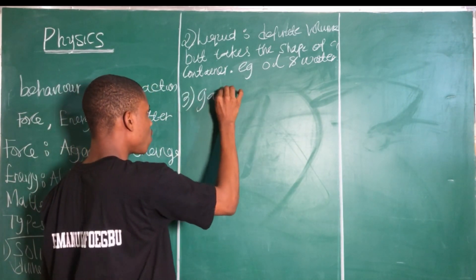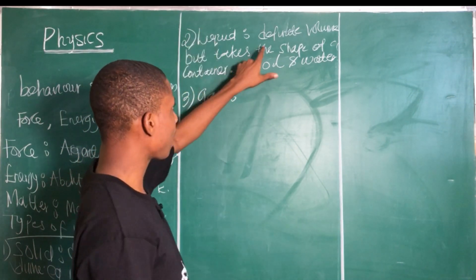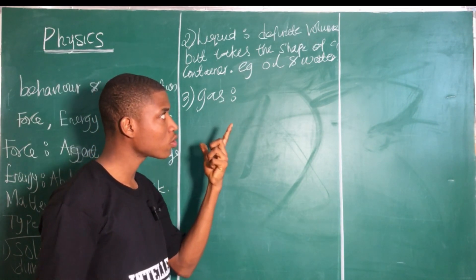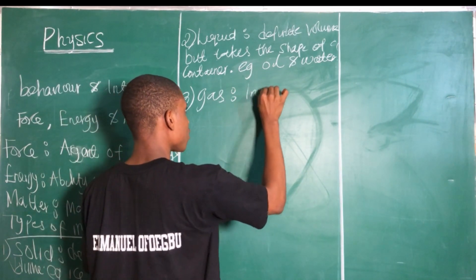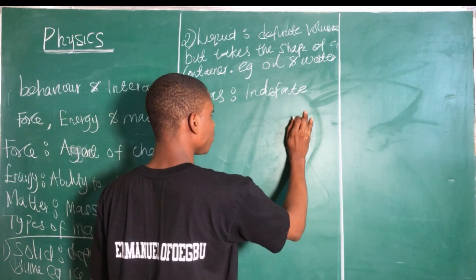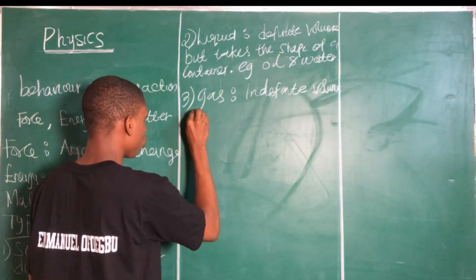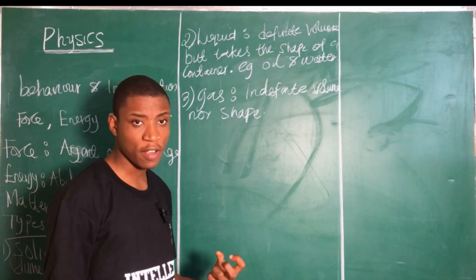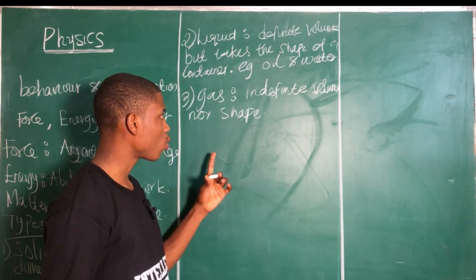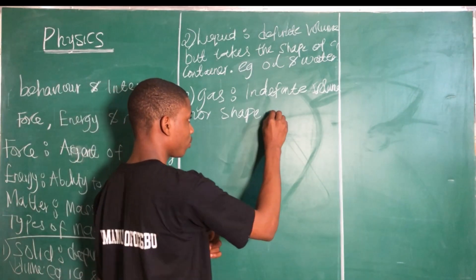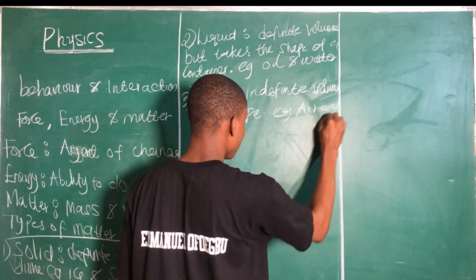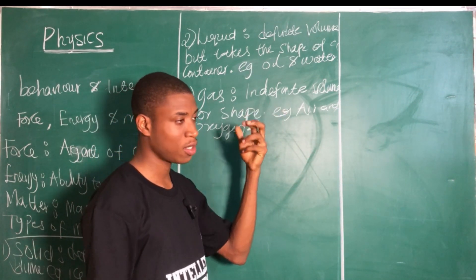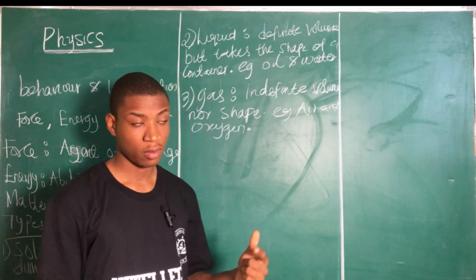The third type is gas. Unlike a liquid which has a definite volume, a gas has neither a definite volume nor a definite shape — it is indefinite in both. Examples of gas are air and oxygen. Air and oxygen do not have a definite volume or a definite shape.